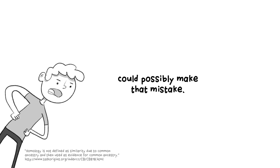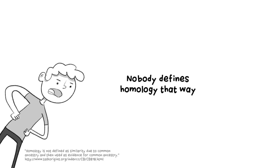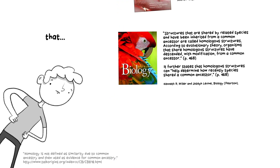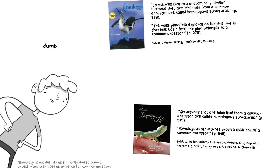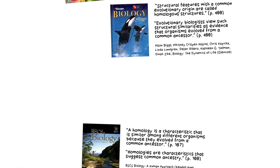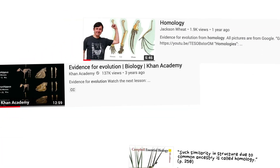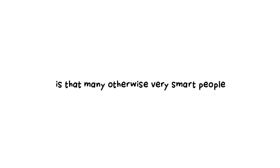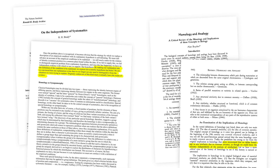No serious biologist could possibly make that mistake. Nobody defines homology that way and then uses it as evidence for evolution. People couldn't possibly be that dumb. The circular argumentation is still regularly used in high school and even college level textbooks, and many a YouTube video. The surprising thing is that many otherwise very smart people didn't realize this. However, more and more people are seeing the problem for what it is.